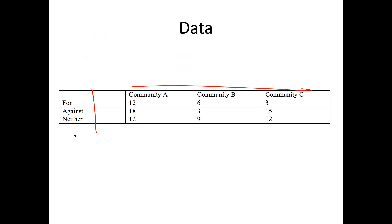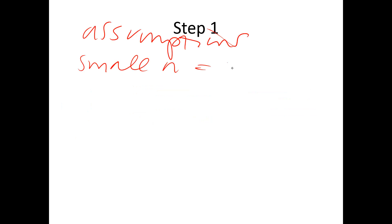So the first step is small n. So this is assumptions. So small n, let's back up one. I've got one, two that are less than five, but that's two out of nine. So seven out of the nine are okay. So I think I'm okay because most of them are greater than five. And then zeros, we don't have any zeros, so we're okay.